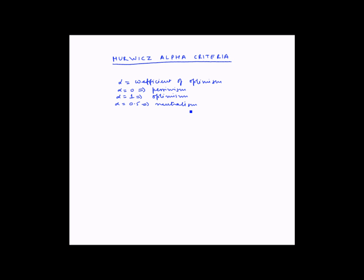There are four steps in the Hurwicz criteria. First is to determine the largest payoff, let's represent this as capital M_i, and the smallest payoff, let's consider this as small m_i. These two are determined for each of the strategies.